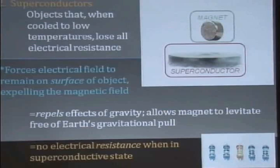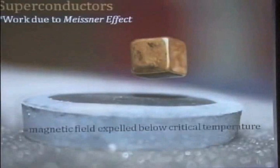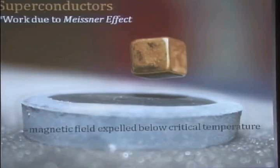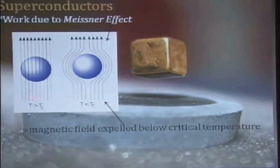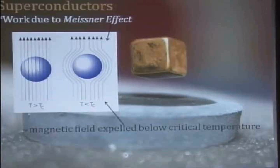This works due to something called the Meissner effect. A scientist named Meissner figured out if this is how the normal electrical field of an object would be, once you cool it down low enough, it repels that field and it stays out on the surface. And this is actually what repels gravity.